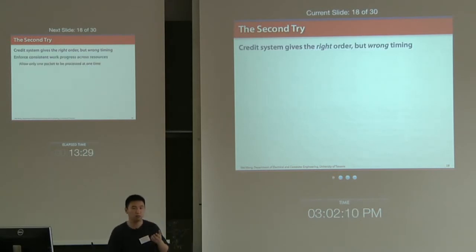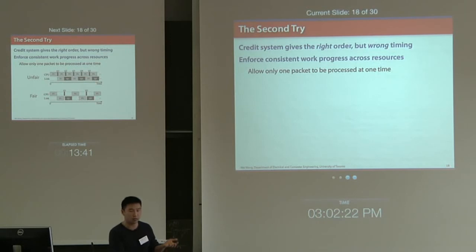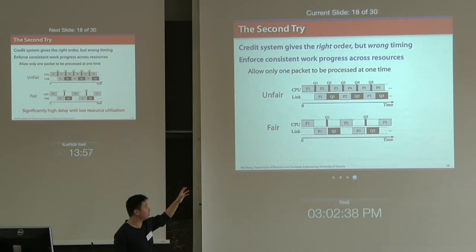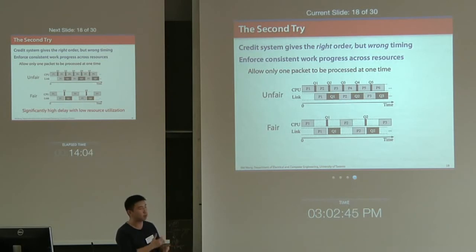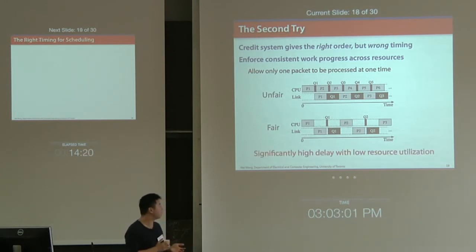We need to modify the algorithm. It turns out that the scheduling order from the credit system is correct, but the timing is wrong. We need to enforce consistent work progress across resources. An extreme solution is to allow only one packet to be processed at a time — keeping the same scheduling order but not scheduling the next packet until the previous packet has finished processing on all resources. This schedule gives a service gap bounded by a small constant, so it is fair, but it incurs significantly high delay with extremely low resource utilization.